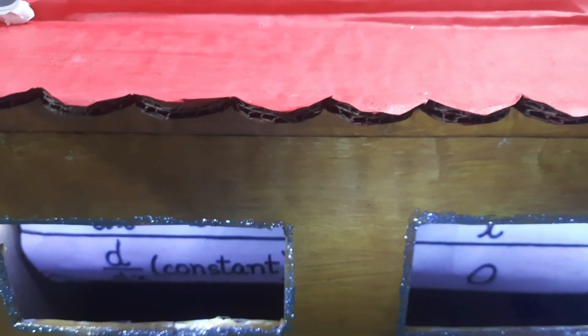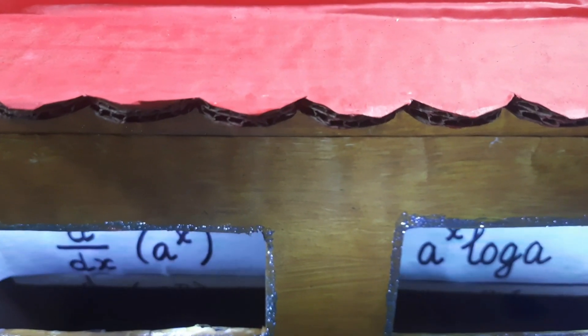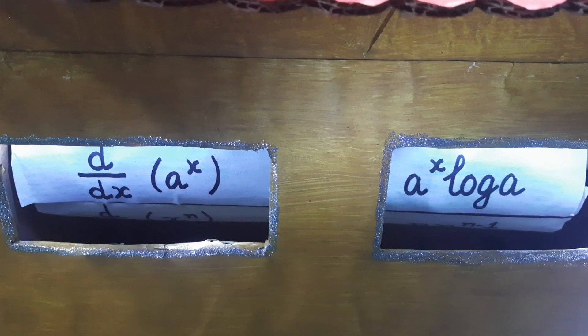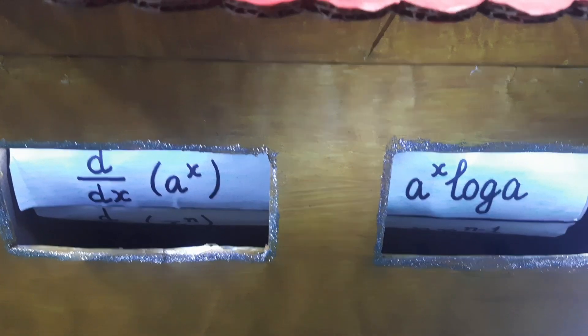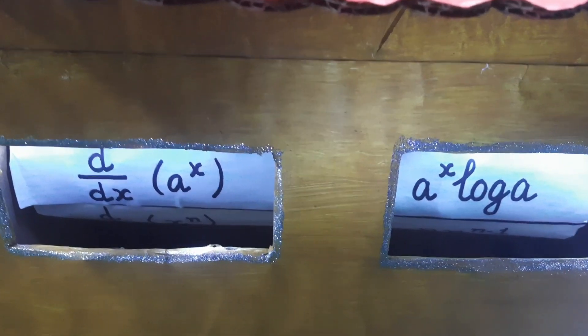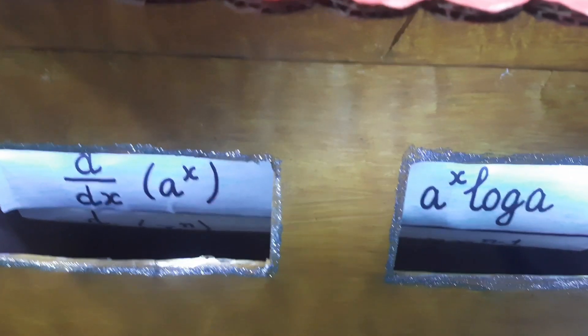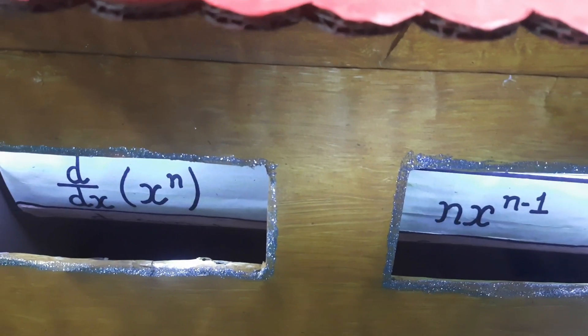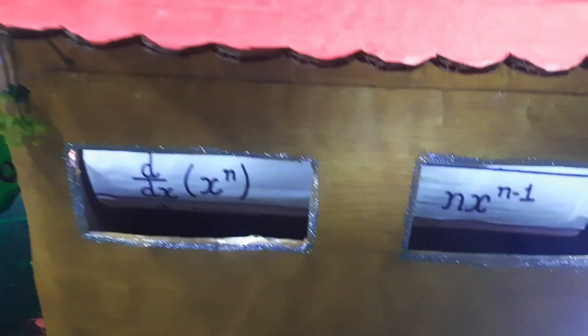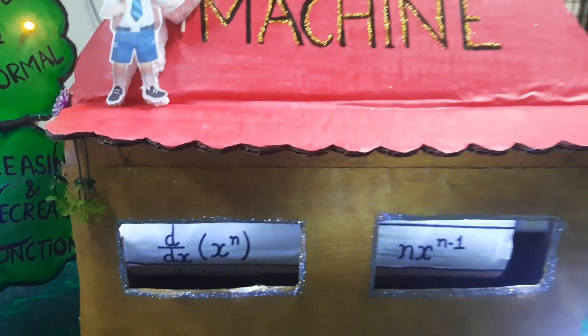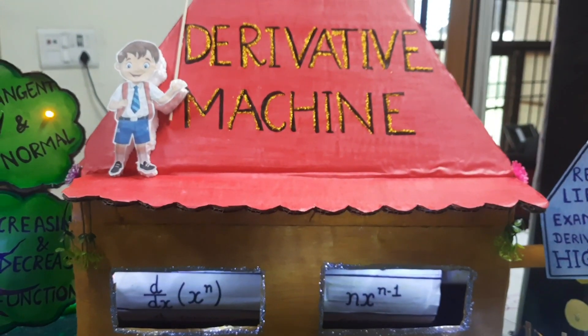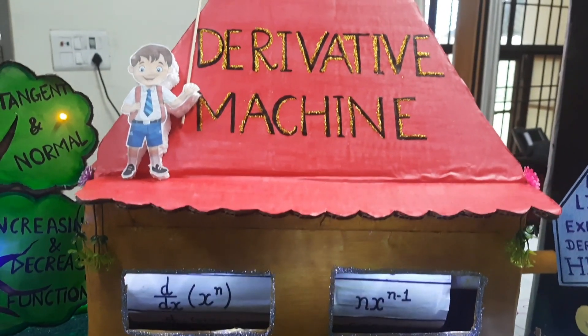Derivative of a constant is equal to 0, and derivative of a raised to the power x is a raised to the power x times log a. These are the 7 formulas which I have shown in this derivative machine.